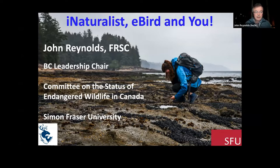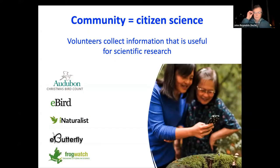The umbrella here is community science generally, and how that can be helpful for conservation and whether it can be fun for a naturalist — especially birders. Community science, also called citizen science, is simply a term for people collecting information that's useful for scientific research. Birders know all about this through Christmas Bird Counts, which are over a hundred years old. There's also eBird, iNaturalist, eButterfly, FrogWatch — there are hundreds of online platforms.